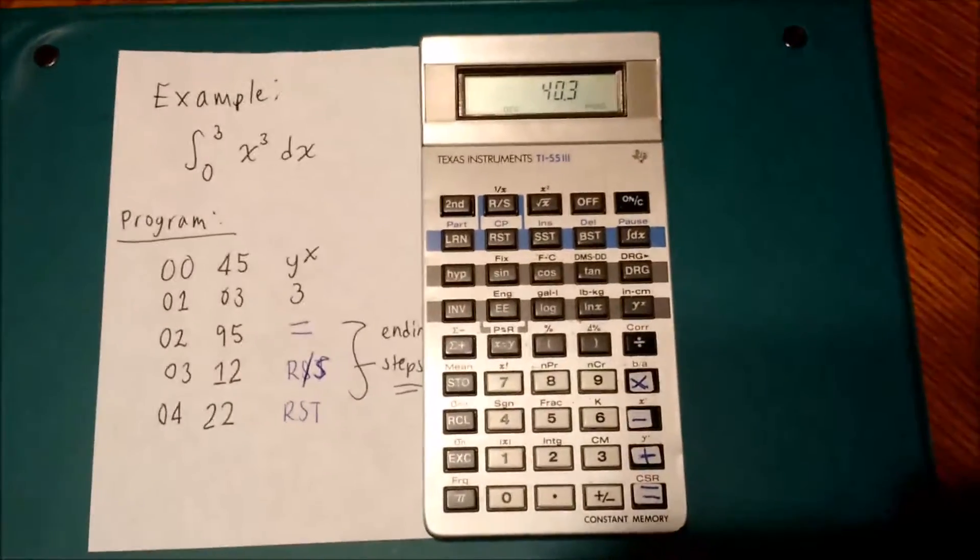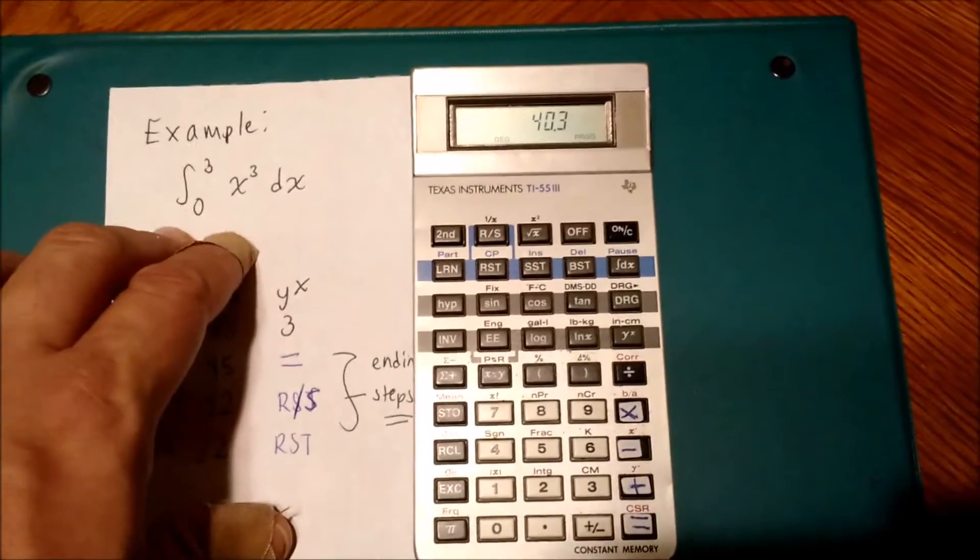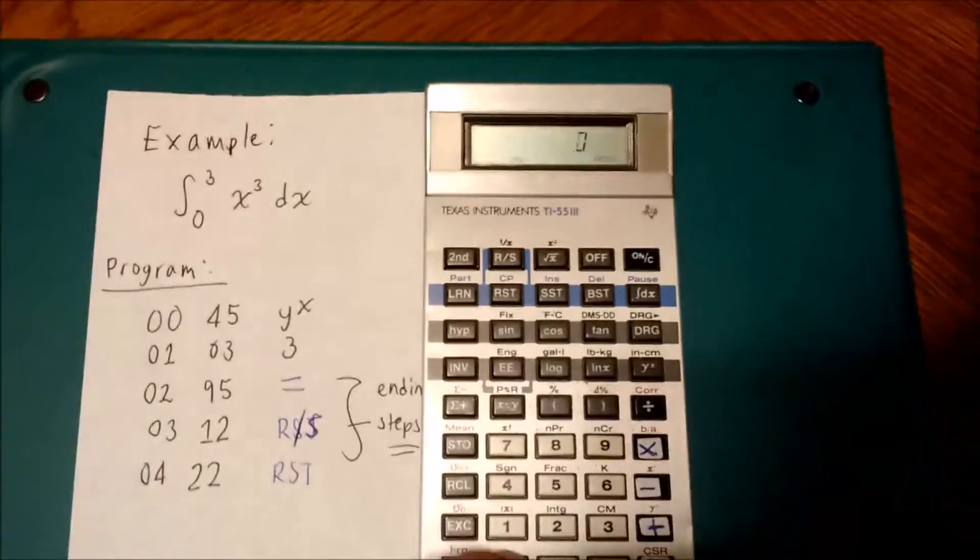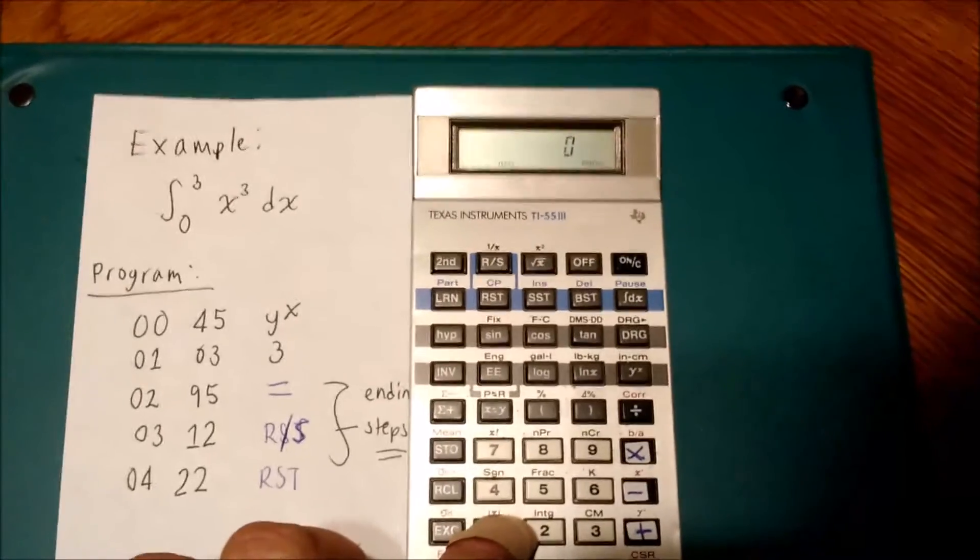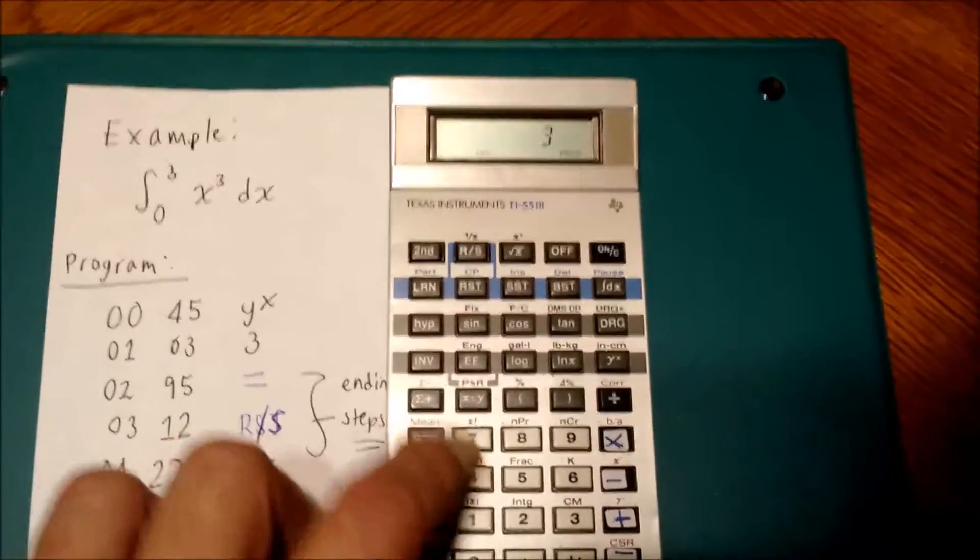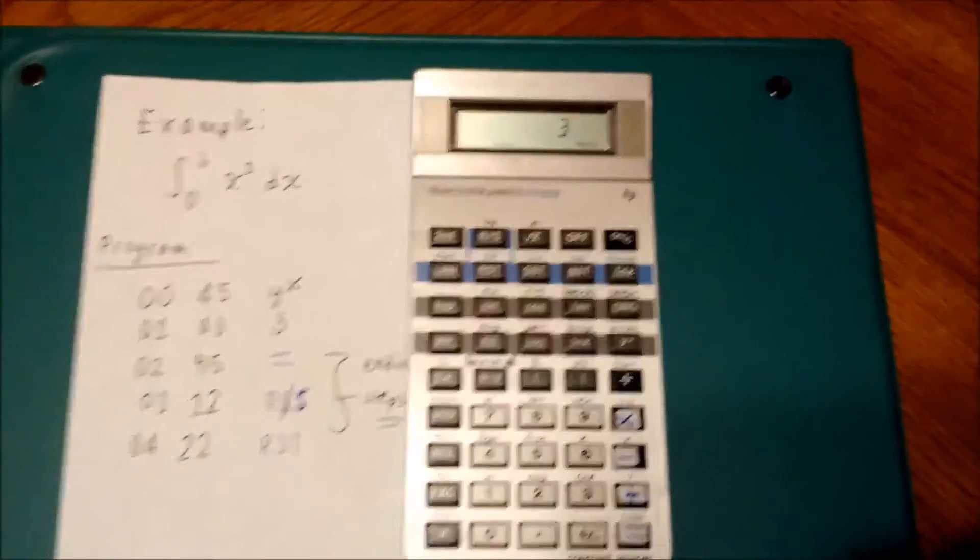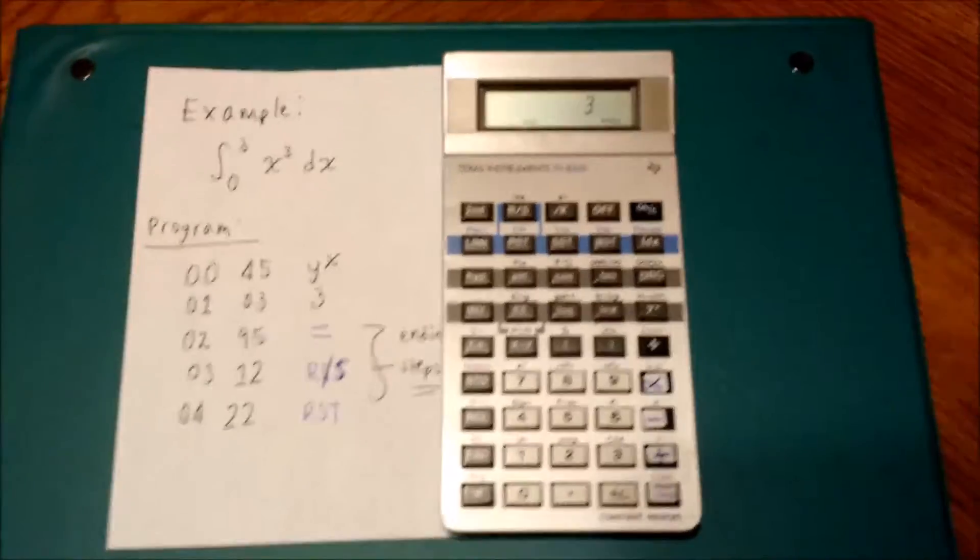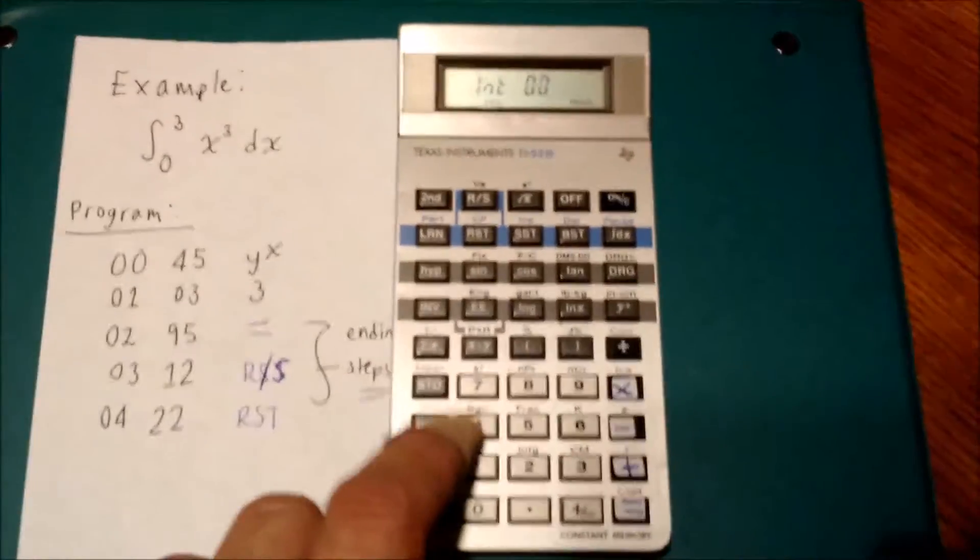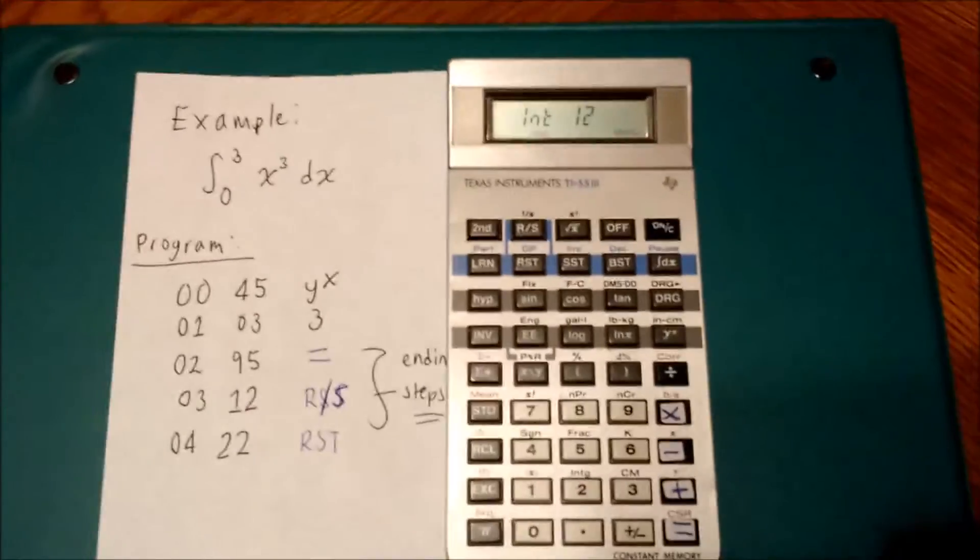I'm going to go back into calculator mode. On my integrand, the lower limit's 0, the upper limit's 3. So I'm going to store 0 in memory 1, and then 3 in memory 2. And I'm going to use 12 partitions, so I'm going to use the integral button. I'm going to hit 12, and then I'm going to hit run-stop.